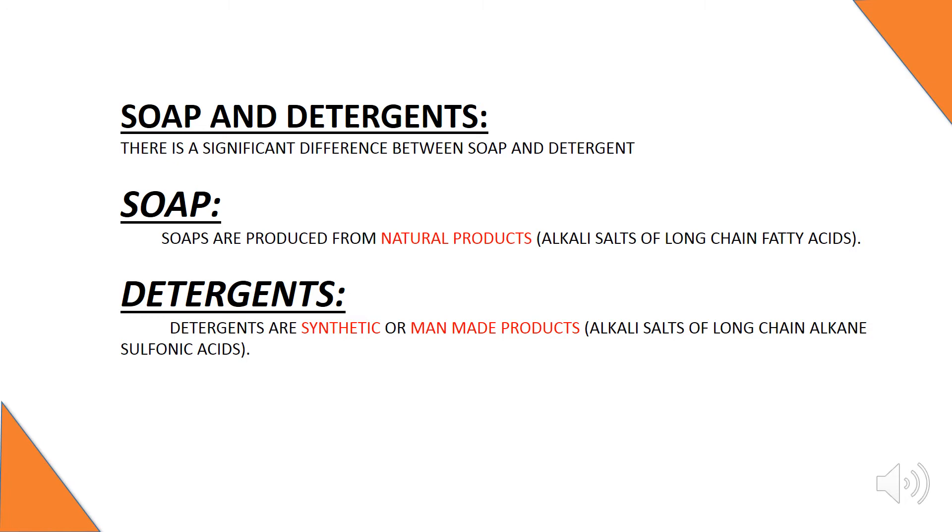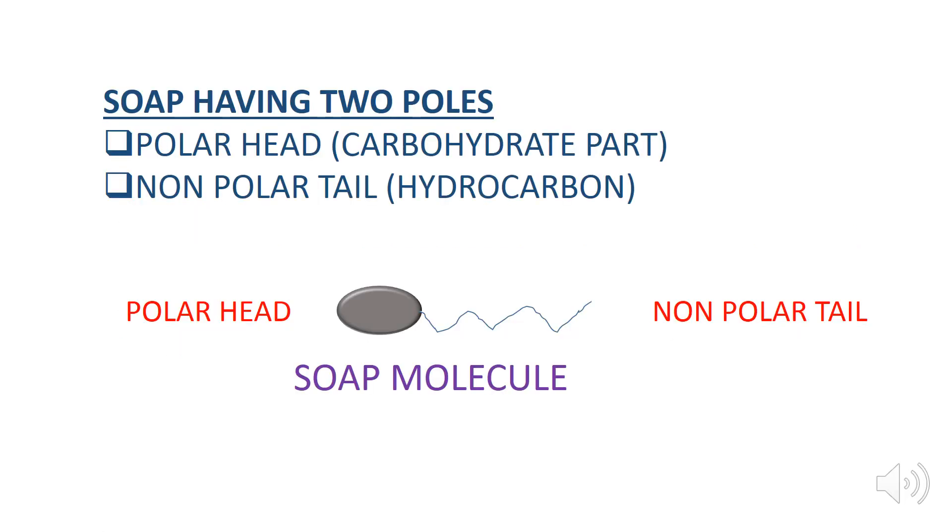Now let's discuss the structure of the soap molecule. Soap has two poles: the polar head and the non-polar tail. You can see the soap molecule in the diagram.